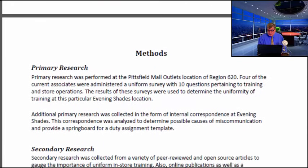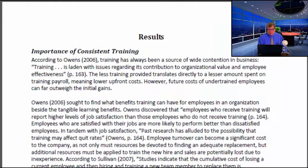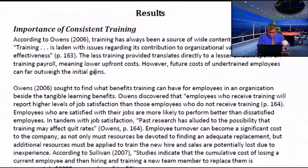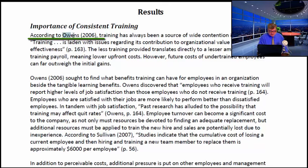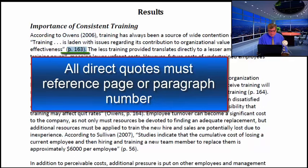Then we have the methods section. Notice that major sections each begin on new pages, and white space is kept regular throughout. Then comes the results, where we have the use of sources — in-text citations. Be sure to follow APA style. For example, 'According to Owens (2006)' — the name and year constitute an in-text citation. The author's name doesn't have to appear inside parentheses as long as it's part of your sentence. Because this is a direct quotation, 'p. 163' appears at the end. Direct quotations must always have page or paragraph numbers.